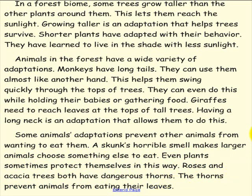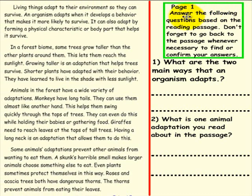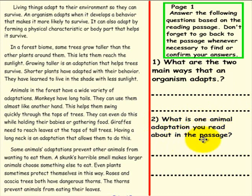Teachers, if you would, please have a student come up to the smart board for the very first series of questions. Page 1: Answer the following questions based on the reading passage. Don't forget to go back to the passage whenever necessary to find or confirm your answers. Question 1: What are the two main ways that an organism adapts? Question 2: What is one animal adaptation you've read about in the passage? Please pick up a pen to answer these two questions.